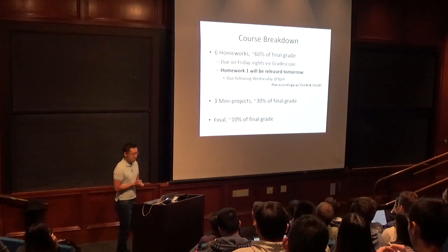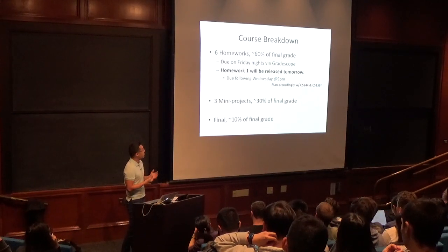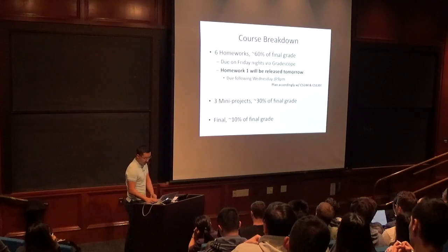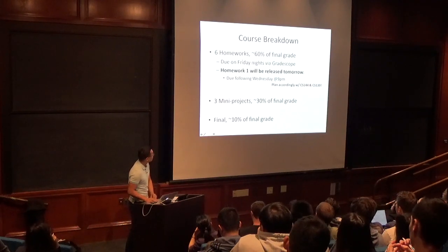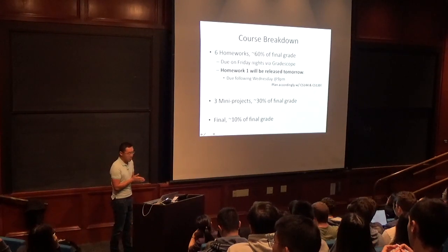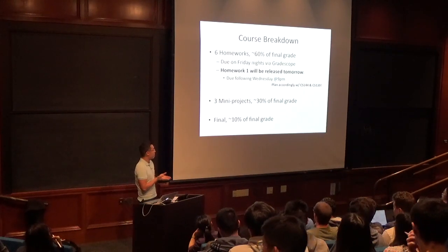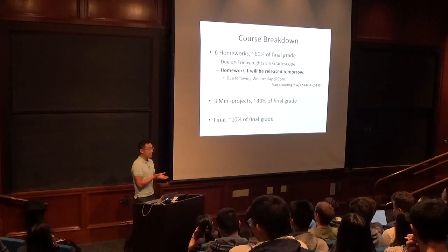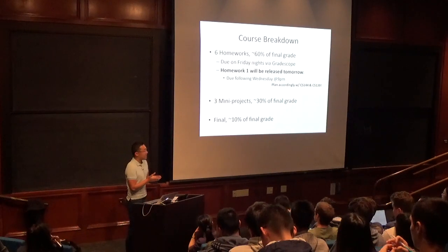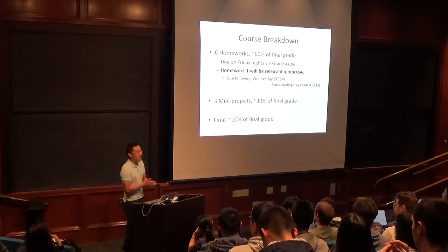The course breakdown: there are 10 things, each worth 10% of the grade. Six homeworks, worth 60% in total — due Wednesday nights on Gradescope. Three mini projects, worth 30% in total. And a final exam worth 10%. Regarding the final: whatever happened last year will not happen again, and it'll be in the same format as two years ago.